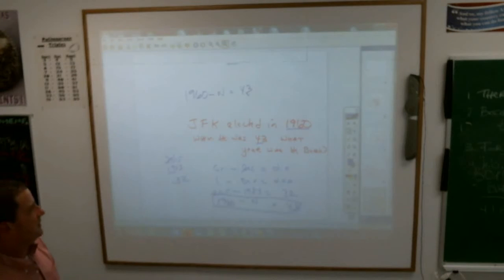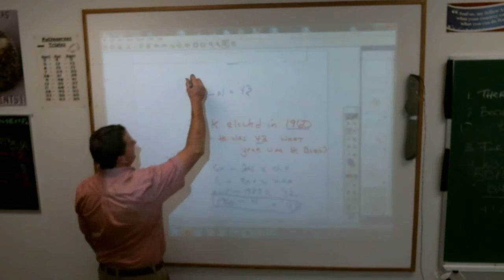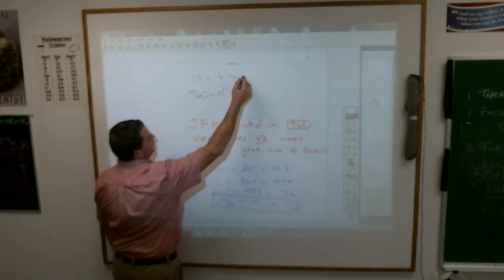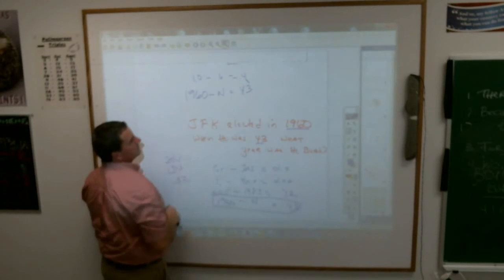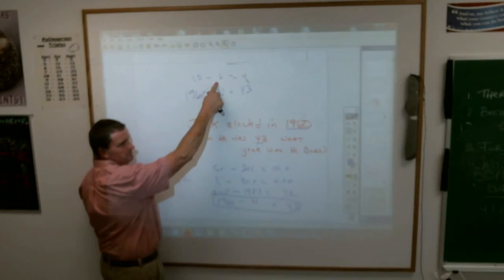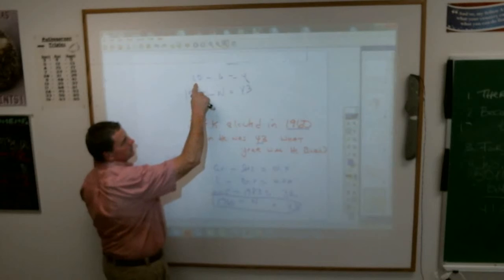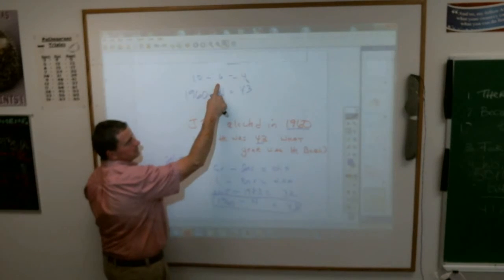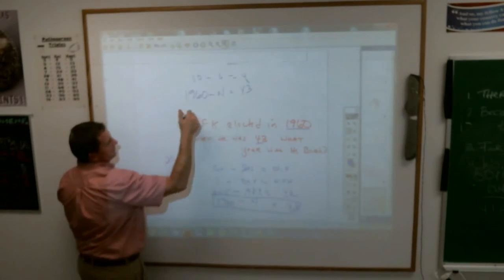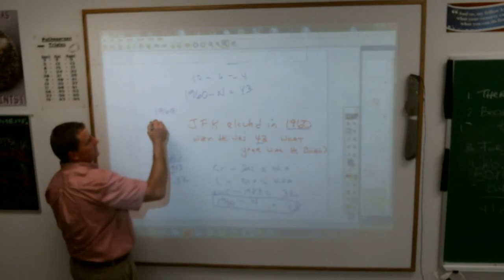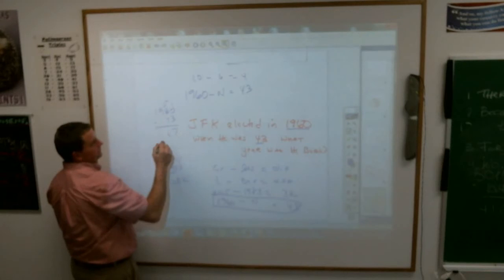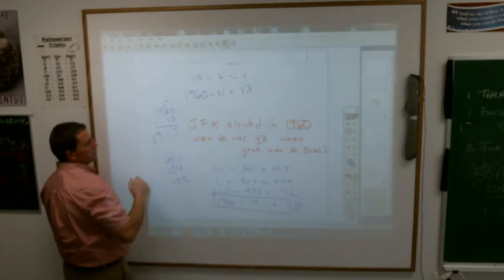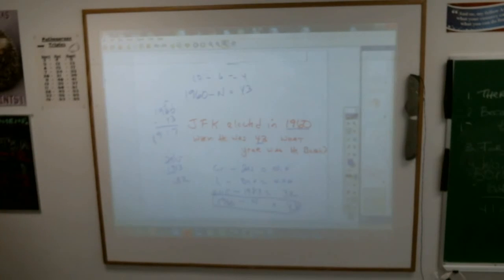Kayleen? Think of an easy subtraction problem. What if I have 10 minus 6 is 4? How do I get 4? How do I get 4? Oh, I'm sorry. How do I get 6? We do a 10 and 4 to get 6. So that's the same thing you're going to do here. 1960 minus 43. John F. Kennedy was born in 1917.